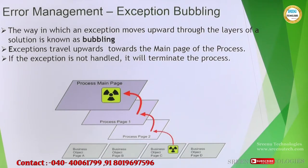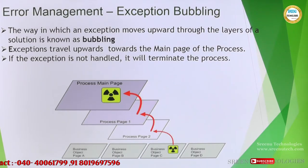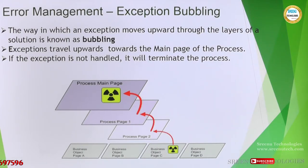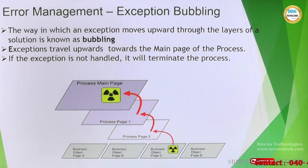Main page is calling page 1, page 1 is calling page 2, page 2 is calling page C of the business object - that is the hierarchy. There is some exception that occurred and there is no recovery and resume logic, so the exception bubbled up to the main page. This is called exception bubbling. If you do not have recover and resume stages in the main page also, the process will terminate and you will see a pop-up. But if you have a recover and resume stage you will not see any pop-up - instead you can have the complete logging details of the exception.